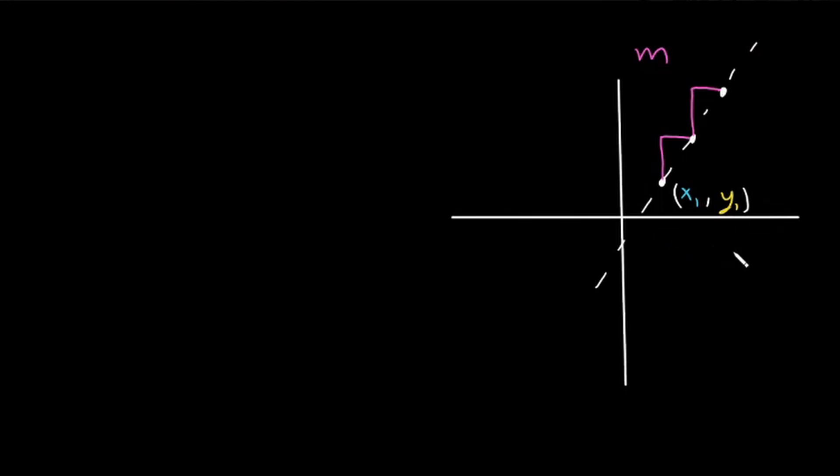So using a single point and the slope, we can actually find the equation for a line. To do that, we use point-slope form of a linear equation: y minus y1 is equal to m times x minus x1.